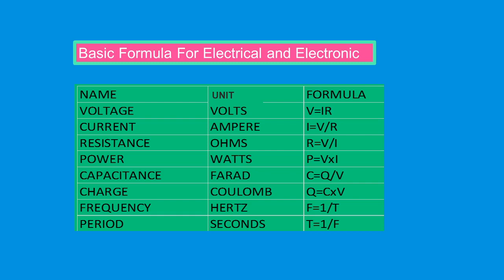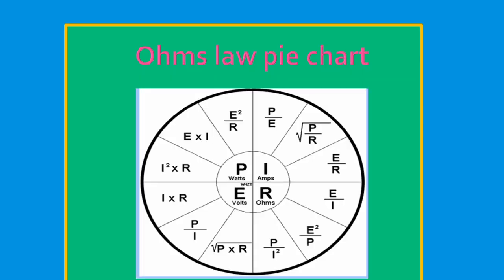So if you just want to learn this, just continue reading. Next is Ohm's law pi chart. For example, if we are going to find watts and our known value is voltage and current, so this is our formula.